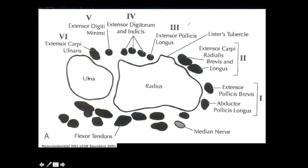This is the radius, this is the ulna, this is lateral, this is medial. This is the area of the distal radial ulnar joint. We nicely see dorsally along the distal radius Lister's tubercle, which will be an important landmark helping us to separate the second and third dorsal extensor compartments. Starting from the lateral margin and extending medially, we see the first dorsal compartment, which is made up of the extensor pollicis brevis and the abductor pollicis longus.